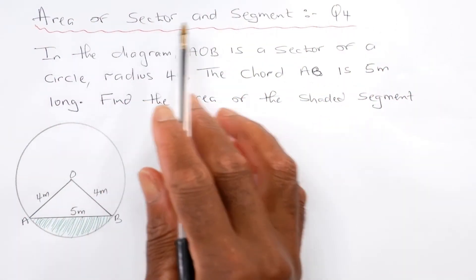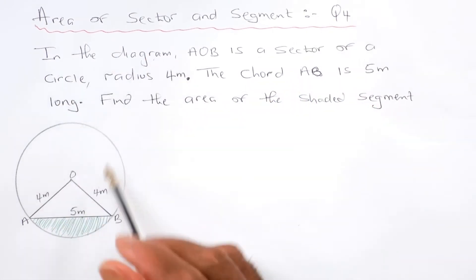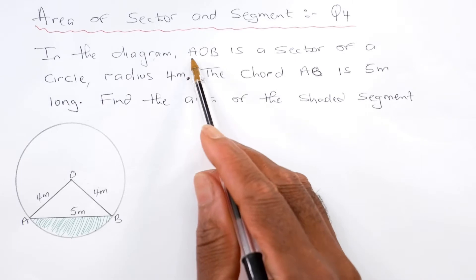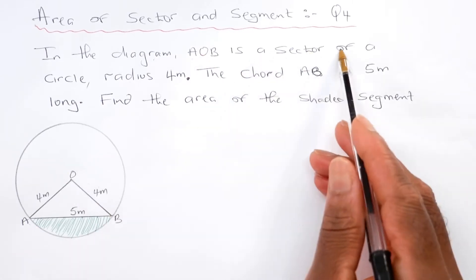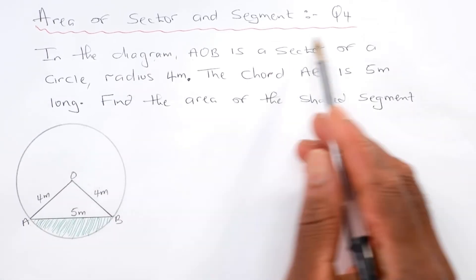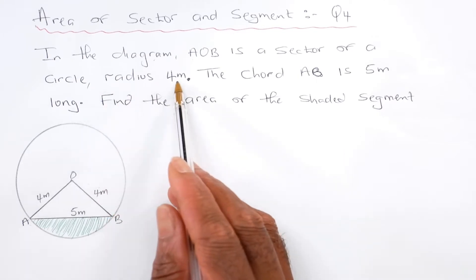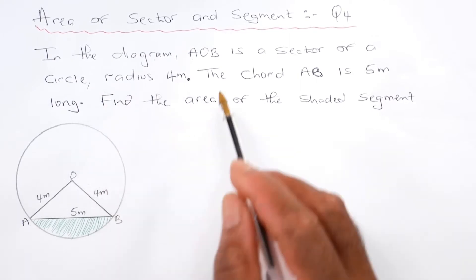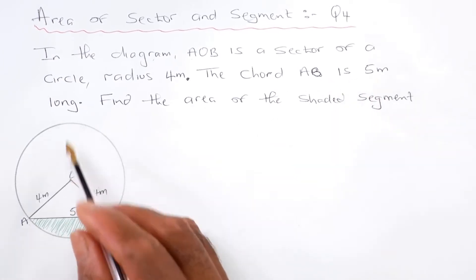Area of sector and segment, question four. In the diagram below, AOB is a sector of a circle with radius four meters. The chord AB is five meters long.